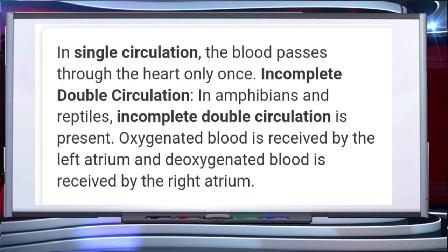This means in amphibians and reptiles the circulation is incomplete double circulation. Whereas in birds and mammals, oxygenated and deoxygenated blood received by the left and right atria respectively passes to the ventricles of the same side. Because the heart has four chambers, the blood pumped out by the ventricles is not mixed — two separate circulatory pathways are present, giving complete double circulation.